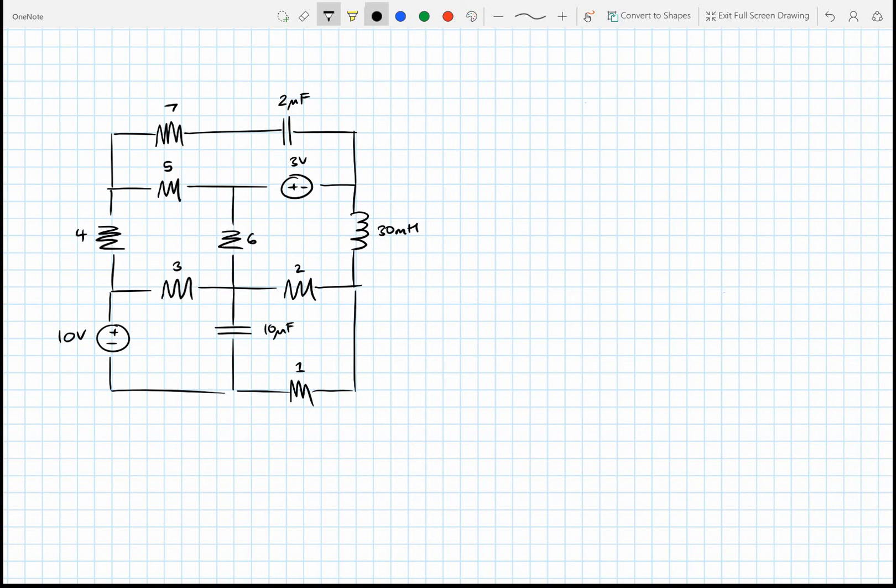I'm going to show you how to solve any DC steady state circuit, and we're not going to use KVL and we're not going to use KCL. Well, we are going to use KCL, but in a roundabout way. So what we're going to be using is MNA, Modified Nodal Analysis.